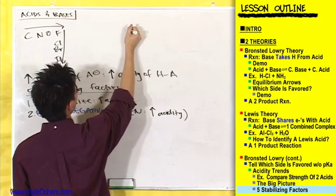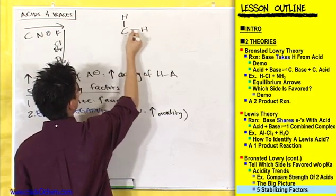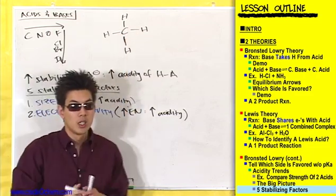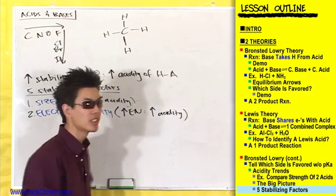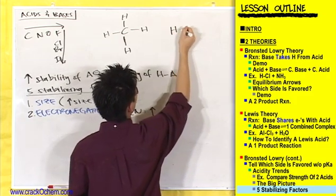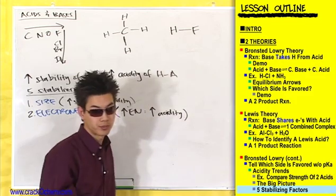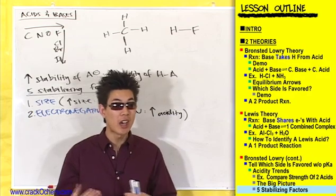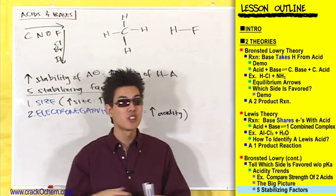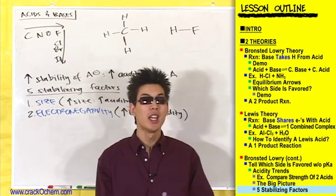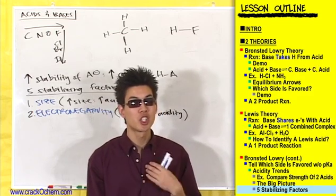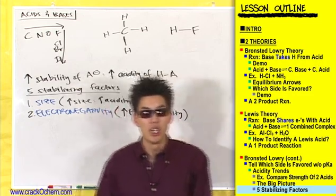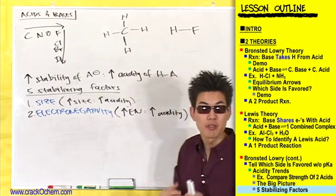Let's take CH4 as an example and compare it to HF. Are both of these compounds technically acids? Do they both have hydrogens on them? Yes — so technically they're both acids. What we're trying to determine is which hydrogen is more acidic: a hydrogen on a carbon or a hydrogen on a fluorine? Based on electronegativity, HF is more acidic — the hydrogen on a fluorine — because fluorine is more electronegative. It's easier for an H to fall off of a fluorine than off of CH4.